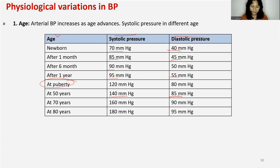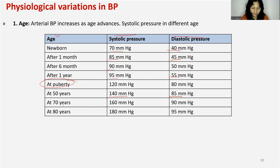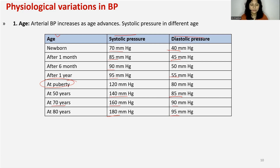So when a 50-year-old patient comes to you, 140/85 mmHg is considered normal — it is a physiological variation. At 70 years, BP will be 160/90, and at 80 years, 180/95 mmHg BP will be considered normal. The average is 120 mmHg, but there are certain age groups where BP can vary.